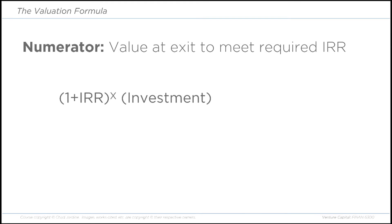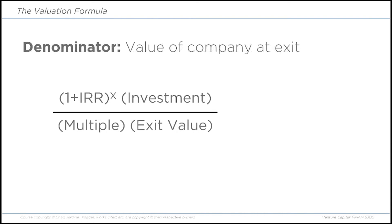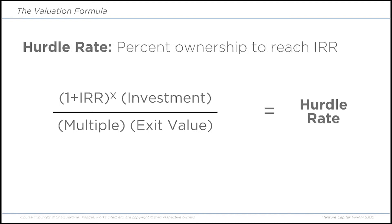It's pretty simple — there's a numerator and a denominator. The numerator is: (1 + IRR) raised to the number of years to exit, times the amount of the investment. This tells us how much the investor's planned investment will be worth assuming the required IRR. The denominator is the value of the entire company at exit, calculated by using a multiple for a key metric or exit value. The numerator divided by the denominator gives us a hurdle rate — the minimum percent of ownership the investor needs for the investment to generate the required internal rate of return.